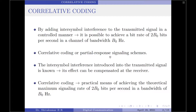The design of these schemes is based on the idea that since the intersymbol interference introduced into the transmitted signal is already known, its effect can be compensated at the receiver. Therefore, correlative coding may be regarded as a practical means of achieving the theoretical maximum signaling rate of 2V₀ bits per second in a channel of bandwidth V₀ hertz.